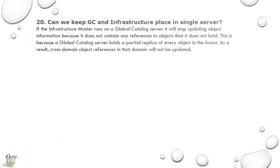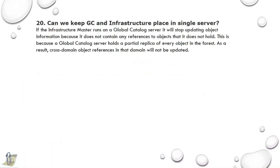20th question: Can we keep the global catalog and infrastructure master on a single server? No, because both perform the same role. Since a global catalog server holds a partial replica of every object in the forest, cross-domain object references in that domain will not be updated.